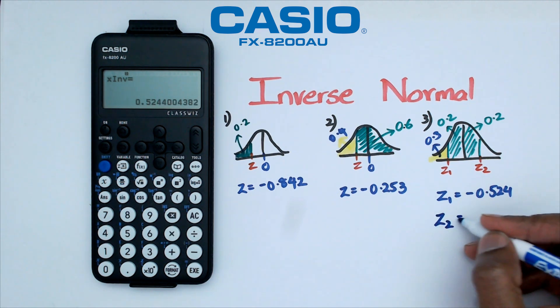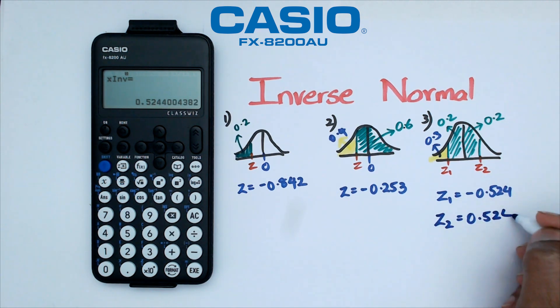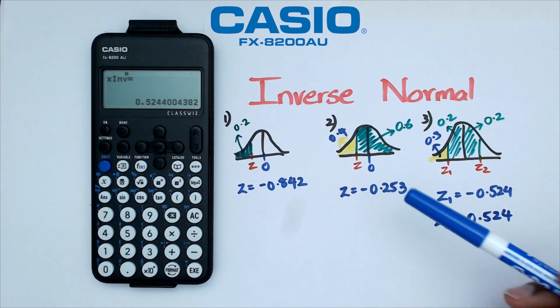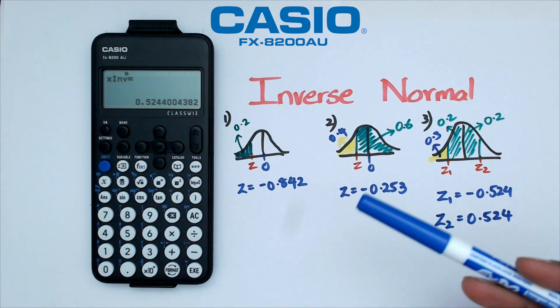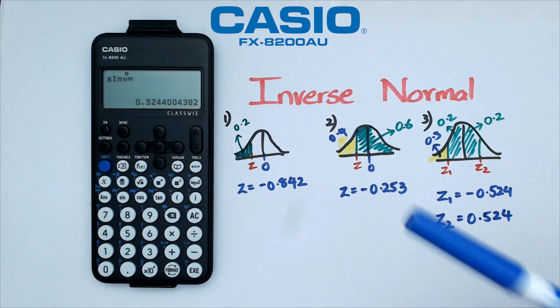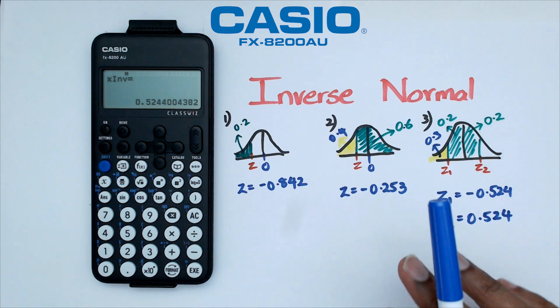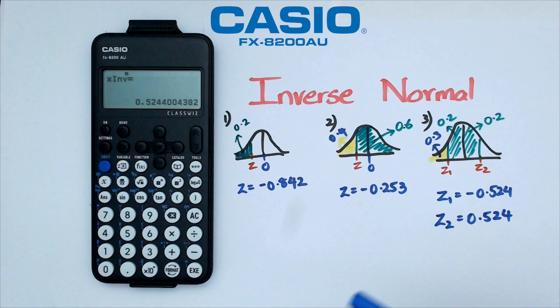So Z2 is equal to 0.524 and folks when it comes to real world problems all you're really doing is you're just changing the mean and standard deviation depending on what your real world problems are but in terms of the area and how you do the inverse of it that's pretty much how you do it on this particular Casio FX-8200AU calculator.